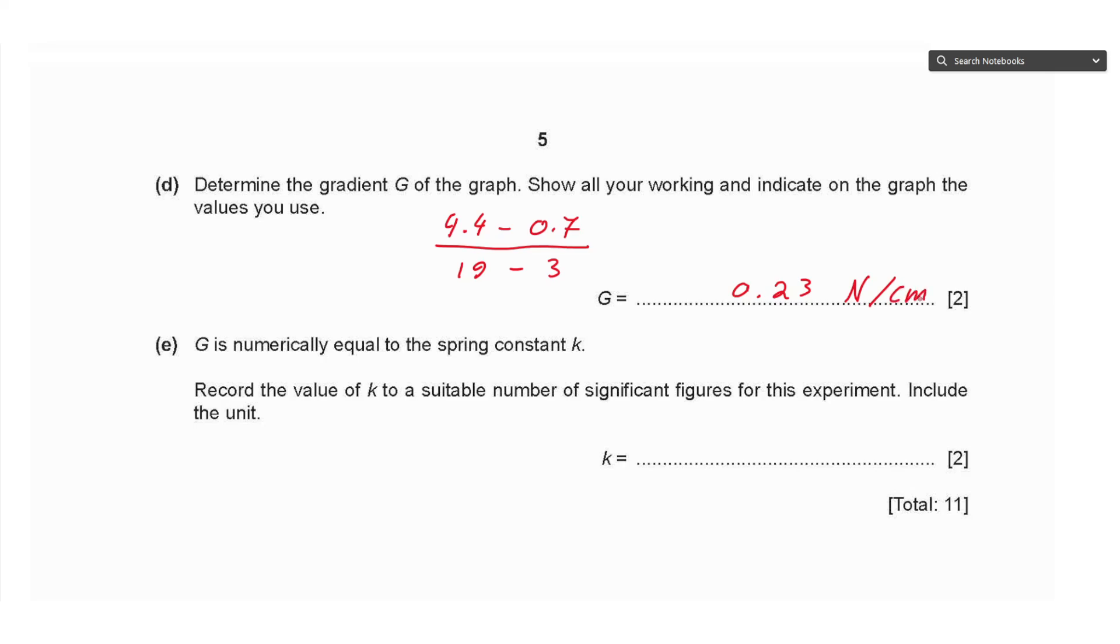Part E says g is numerically equal to the spring constant k. Record the value of k to a suitable number of significant figures for this experiment. Include the unit. So it is the same number, 0.23 Newtons per centimeter, and I wrote it to two significant figures since the numbers from the graph are approximately to two significant figures. The minimum number of significant figures was two, so we wrote the answer to two significant figures.